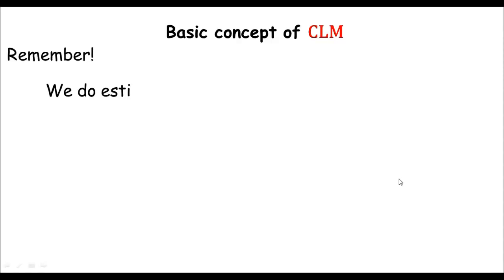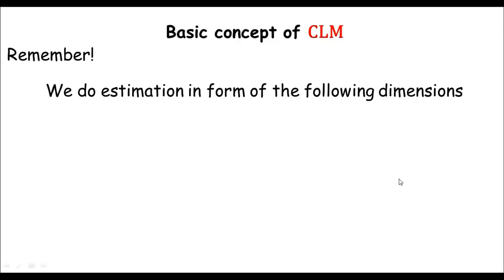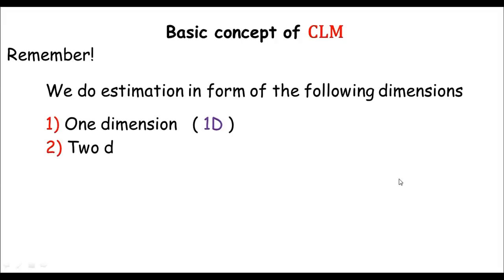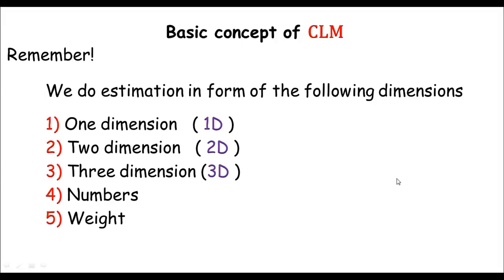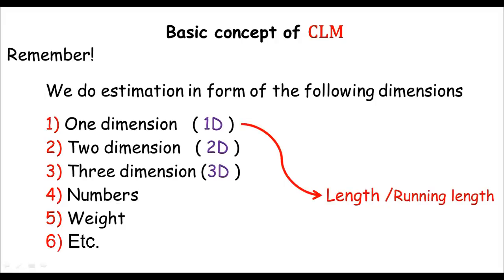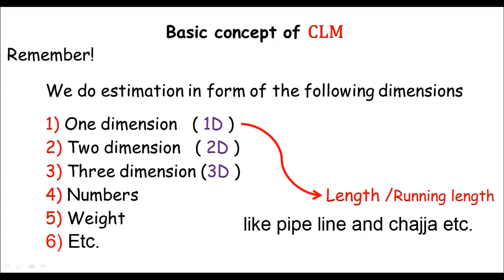Remember, especially in quantity survey, we do the estimation process per items in one dimension, in two dimension, in three dimension, and of course in number, and sometimes in weight. By one dimension, I mean just the length or running length. Like you can take the example of Chajja — the Chajja calculation is just done in running pit or in running meter, meaning in running length.